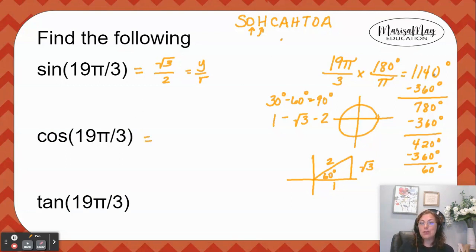Look at cosine. If you learned SOHCAHTOA, you learned that cosine was the adjacent over the hypotenuse. In this triangle the adjacent is 1 and the hypotenuse is 2.